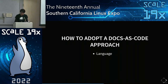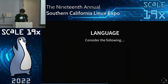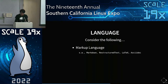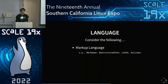So how do you actually adopt a Docs as Code approach? I would argue you need three things: a language, a tool, and a methodology. For language, you might want to use a markup language like Markdown, reStructuredText, LaTeX if you work in academia, or AsciiDoc. These are all markup languages that are human-readable and plain text, which makes them easily compatible with modern version control systems like Git.